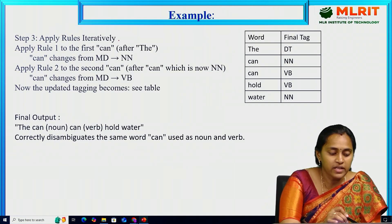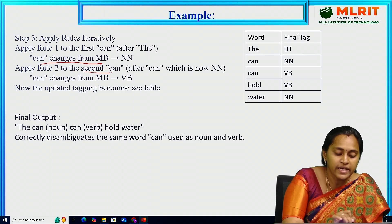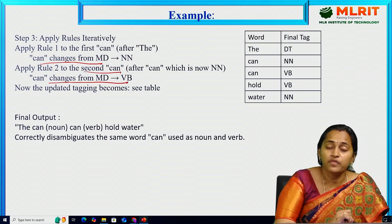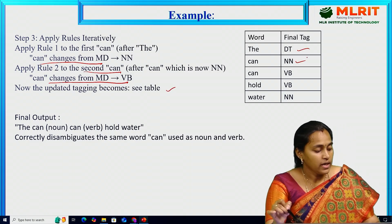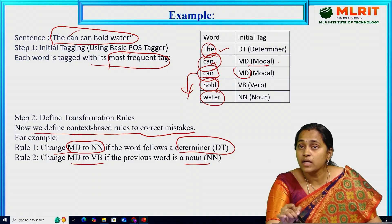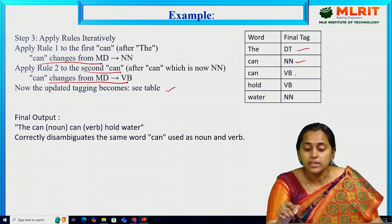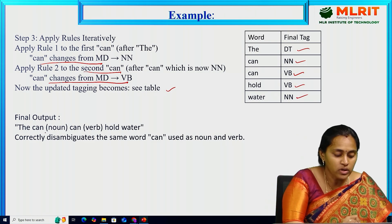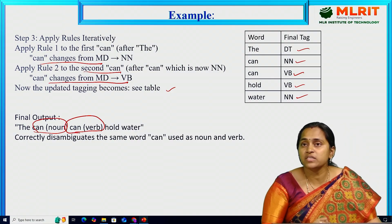Applying the rules iteratively: Rule one — 'can' after 'the' changes from MD (modal) to noun. Rule two — 'can' after 'can' (now noun) changes MD to verb. Looking at the final table: 'the' is a determiner, the first 'can' changes from modal to noun after applying the transformation rule, the second 'can' is a verb, 'hold' is a verb, and 'water' is a noun. This is the final output: 'the can' — 'can' is a noun, second 'can' is a verb. This is the final modification and sentence output.